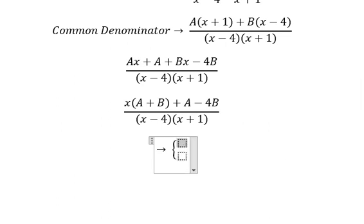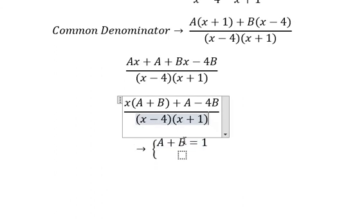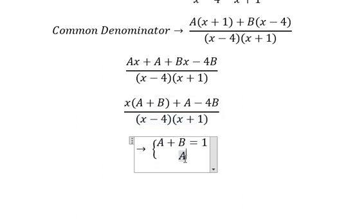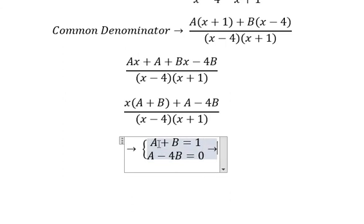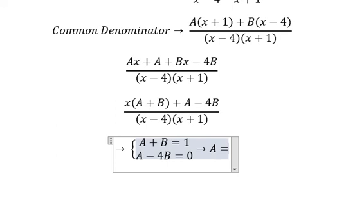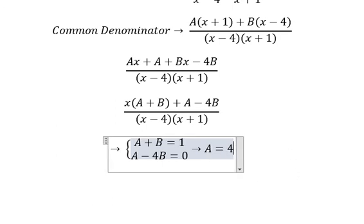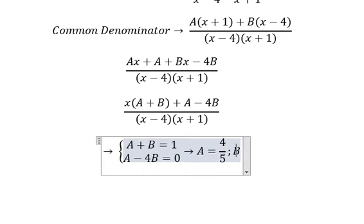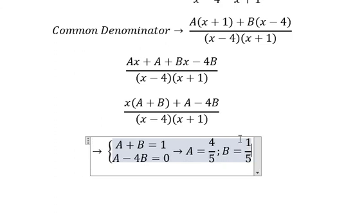We have A plus B equals to 1, A minus 4B equals to 0. We find the solution of A and B. We got A equals to 4 over 5, B equals to 1 over 5. We put the numbers in.